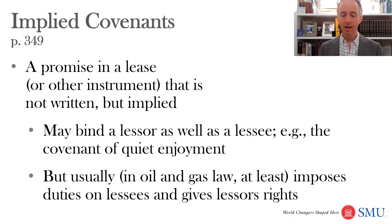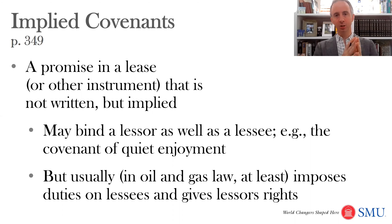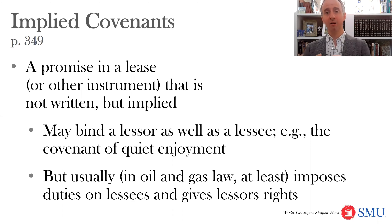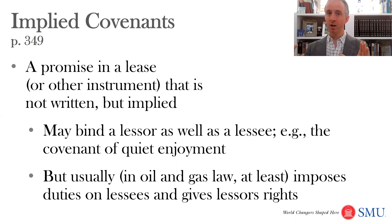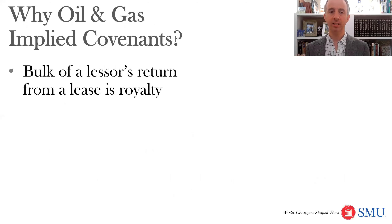However, for most of the rest of this course, we'll be talking about implied covenants that are owed by the lessee oil and gas company to the lessor. Today we're going to talk about the implied covenant to market, which is the duty to sell that natural gas as soon as you can for a good price, so that the share that the lessor landowner gets — or that someone who gets the royalty — gets is enough to compensate.